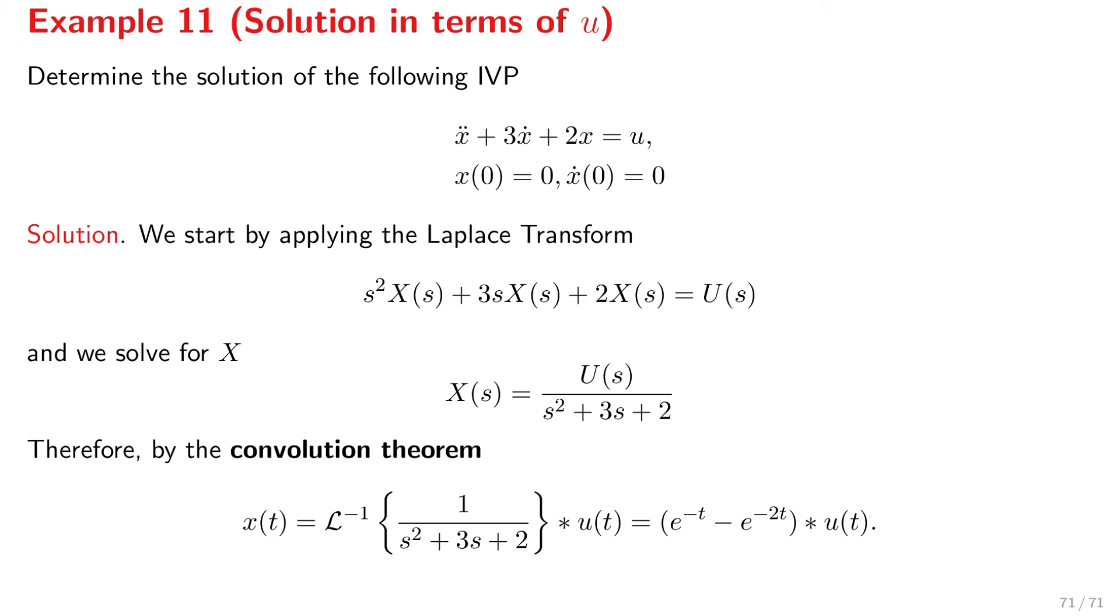This happens because, for example, what is the Laplace transform of x dot? It is sx minus x at 0, but x at 0 is 0 in this example. Next, we need to solve for x uppercase, so we solve for x uppercase. Of course, we have u uppercase there. Now, we can apply the convolution theorem. We can see this as a product of u with 1 over s squared plus 3s plus 2. And once we do that, we can apply the inverse Laplace transform on this first function is equal to exponential of minus t minus exponential of minus 2t convolution with u. And that's the result. We'll leave it like that. There is nothing more we can do. But this is the solution. It is, in fact, a solution that can accommodate any input signal u. So, that is how you can apply the Laplace transform and its inverse to solve initial value problems.